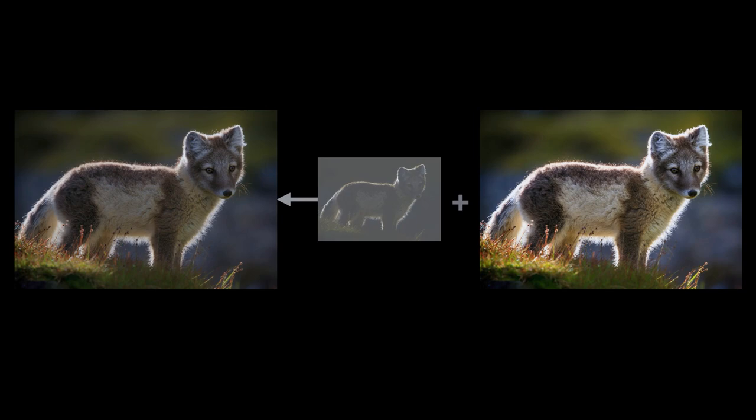Alternatively, we can store the HDR rendering as the base layer and later compute the SDR rendering by multiplying the base HDR by the inverse of the gain map. As Eric will now describe and show in detail, this gives us the simple, flexible format we've been looking for.